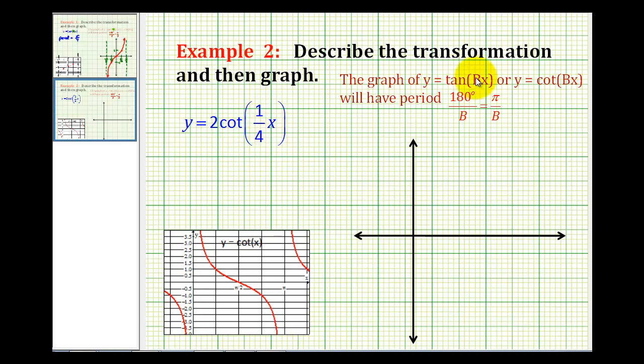So the coefficient of x, often referenced as the variable b, is going to affect the period of the cotangent function. And then even though cotangent does not have an amplitude, this two out here is going to have an effect on the graph. It's going to have a vertical stretch of a factor of two.